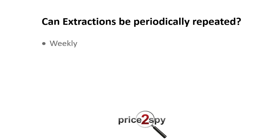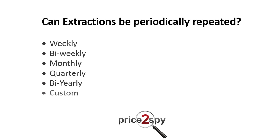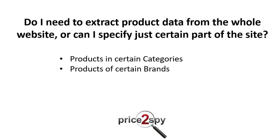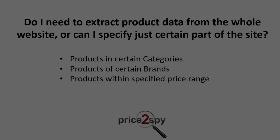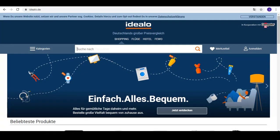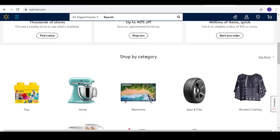Can extractions be periodically repeated? Yes, you're welcome to specify the frequency of the repeated extractions. Do I need to extract product data from the whole website, or can I specify just certain parts of the site? You're welcome to narrow down the product range that should be extracted. For example, you can specify that only the following products get extracted: products belonging to certain categories, products of certain brands, products with a specified price range, etc. This is especially useful when extracting product data from huge marketplace websites like Amazon, eBay, Idealo, Walmart, etc.